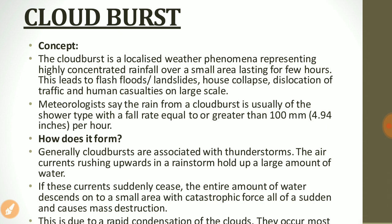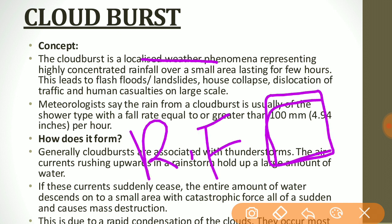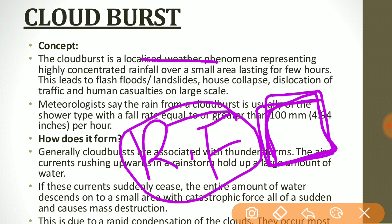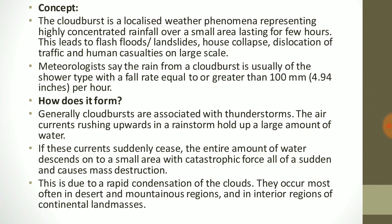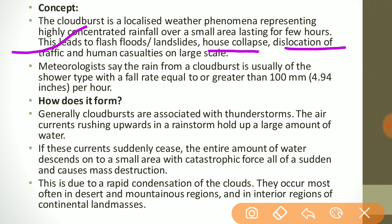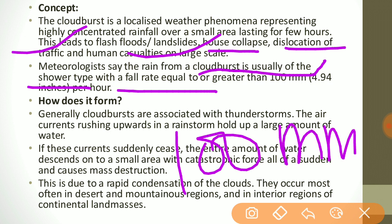The next topic is cloudburst. A cloudburst is a localized weather phenomenon representing highly concentrated rainfall over a small area lasting for a few hours. This leads to flash floods, landslides, house collapses, dislocation of traffic, and human casualties on a large scale. Meteorologists say the rainfall from a cloudburst is usually of shower type with a fall rate equal to or greater than 100 mm per hour.